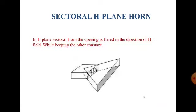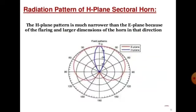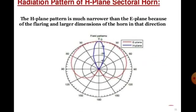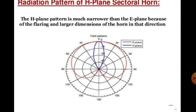If flaring is done in the magnetic field direction, we obtain a sectoral H-plane horn. In the H-plane sectoral horn, the opening is flared in the direction of the magnetic field while keeping the other dimension constant. The radiation pattern shows that the H-plane pattern is much narrower than the E-plane, because of the flaring and the larger dimension of the horn in that direction.